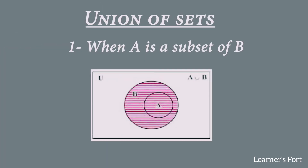Now let's discuss the union of sets using Venn diagrams. The first case is when A is a subset of B, meaning all elements of A are present in set B. Here, B is drawn as a bigger circle and A is drawn inside it. The entire area of both A and B is shaded to represent A union B.